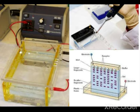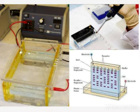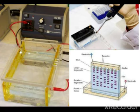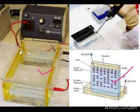The matrix used for gel electrophoresis is agarose. Agarose is a natural polymer extracted from seaweeds, which is a type of algae. This agarose gel provides the medium through which DNA fragments move during electrophoresis.